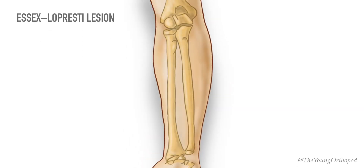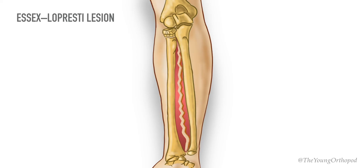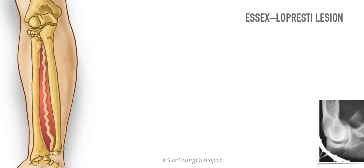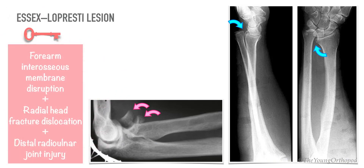The Essex-Lopresti lesion is defined as longitudinal disruption of the forearm interosseous membrane, usually combined with dislocation or fracture-dislocation of the radial head plus distal radio-ulnar joint injury. On the forearm radiograph you can appreciate fracture-dislocation of the radial head and the distal radio-ulnar joint injury. The injury is named after Peter Essex-Lopresti, who described it.